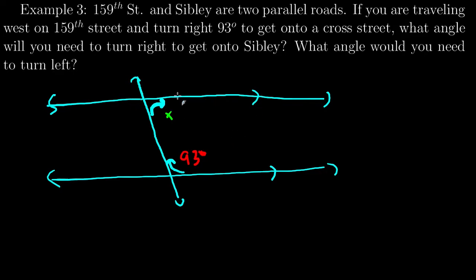And I want to know what angle I would have to turn again right to get onto Sibley. And I can see that I have two parallel lines. I see a transversal. I see that these angles don't look the same. 93 degrees is obtuse. X looks acute.